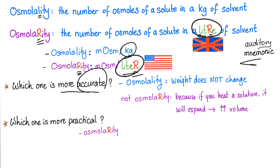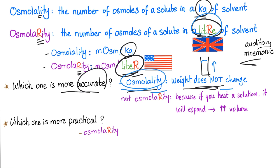Which one is more accurate — osmolality or osmolarity? The answer is osmolality. Why? Osmolality is measured per kilogram and weight doesn't change. For example, if you take a test tube containing fluid and heat it, the volume is going to increase, but the weight is not going to change. That's why osmolality is more accurate. If you heat a solution for osmolarity, it will expand and the volume increases — so osmolarity is not the accurate one.